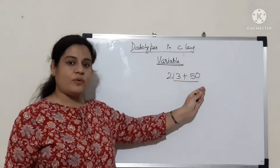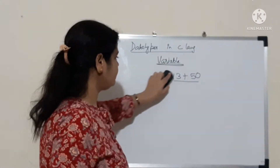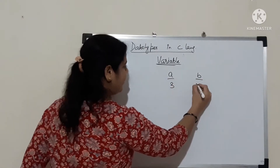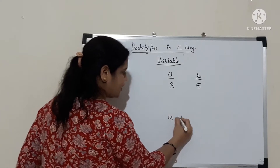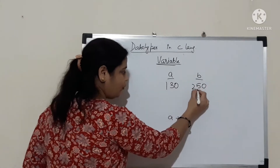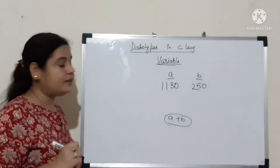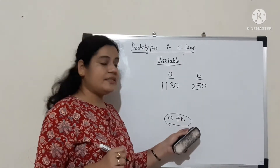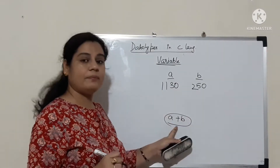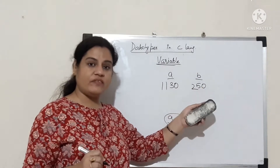To overcome this problem, you can store these values into variables. If I say A and B — I am storing 3 in A, 5 in B, and I am writing A plus B. If I change the values to 30, 130, 50, 250, 1130, whatever, my statement will remain the same. This is the benefit of variables — the variable can change its value but the statement will remain the same. So A and B are here behaving like variables.